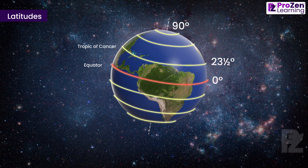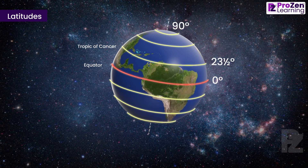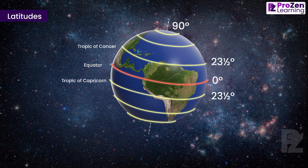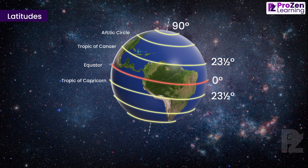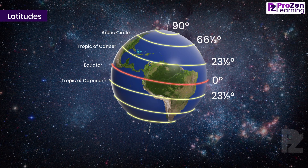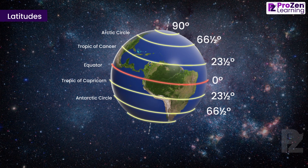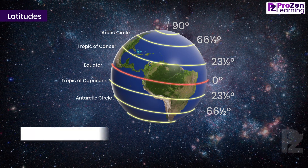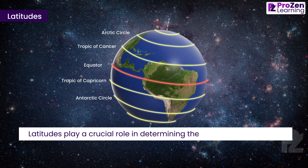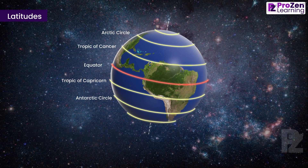Some important parallels of latitudes include: the Tropic of Cancer at 23.5° N in the Northern Hemisphere, the Tropic of Capricorn at 23.5° S in the Southern Hemisphere, the Arctic Circle at 66.5° north of the equator, and the Antarctic Circle at 66.5° south of the equator.